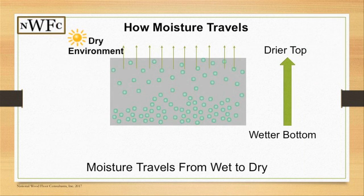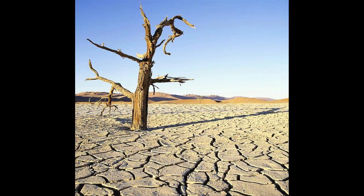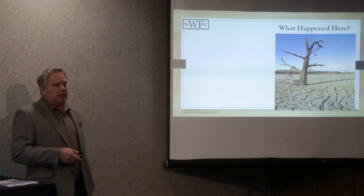We start by asking a simple question: how does moisture travel? In a dry environment, with the sun baking down on the floor, it's going to end up drier on the surface and wetter on the bottom. Looking at this desert river bottom, what happened to the dirt? It cracked — because it dried up.